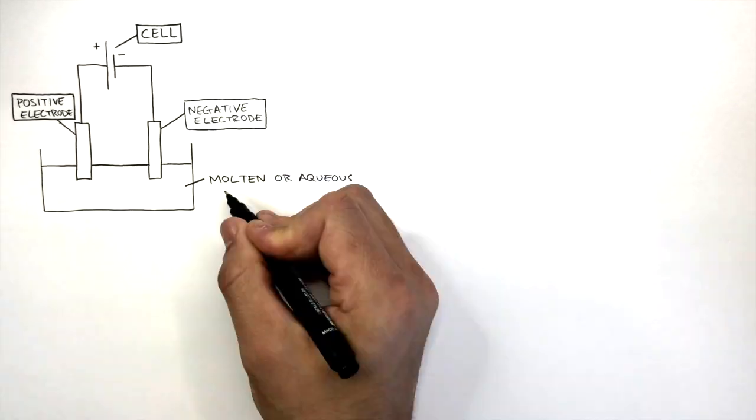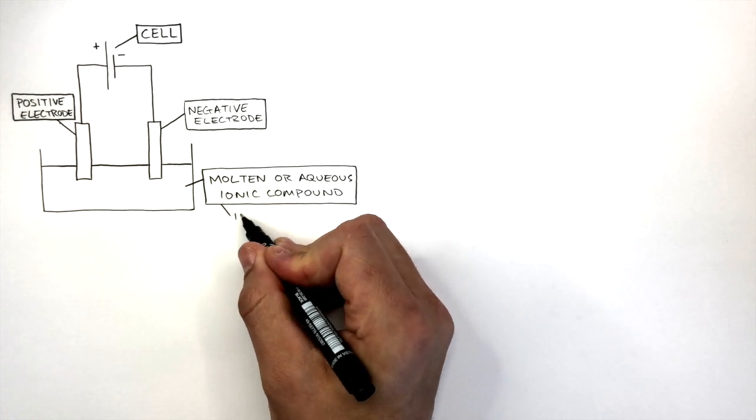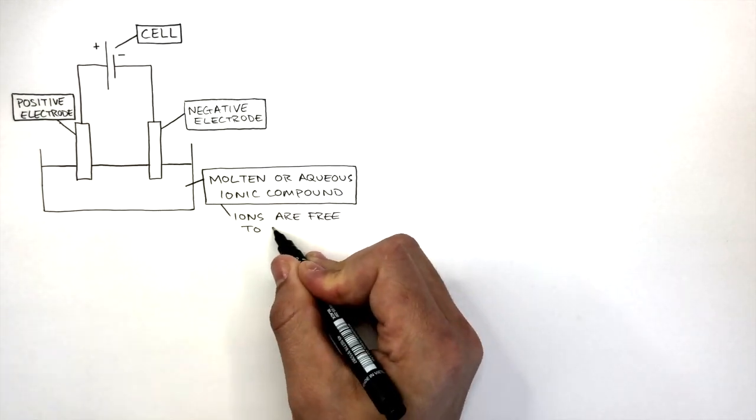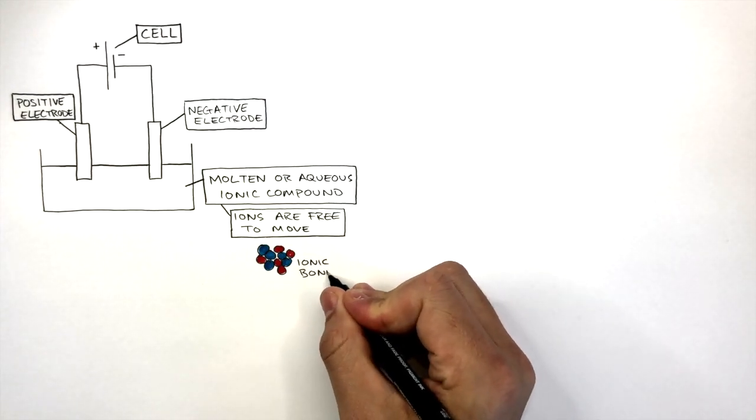This is the molten or aqueous ionic compound which takes the shape of its container as the ions are free to move. This particle diagram shows how the ions are randomly arranged and touching as the ionic bonds are broken.